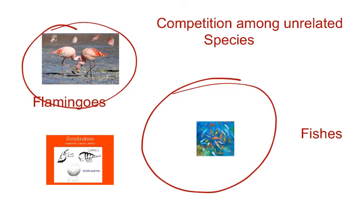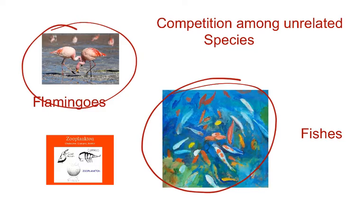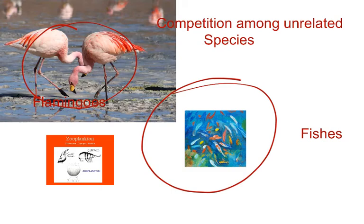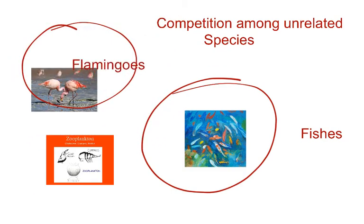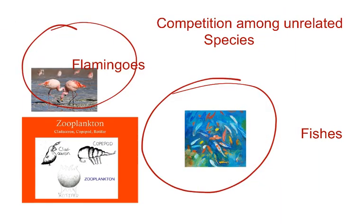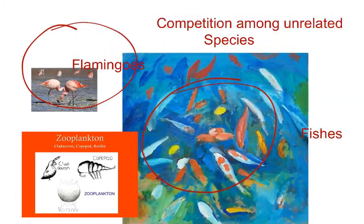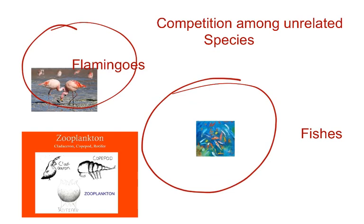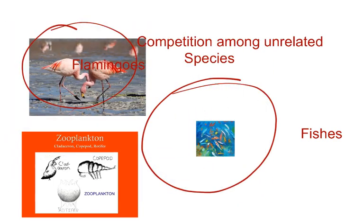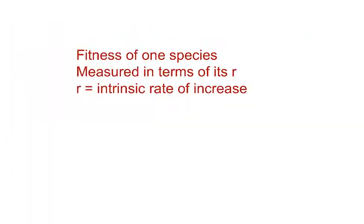In this case, the fish population is coming close to extinction. The fish population is getting reduced because of the non-local flamingos when they are introduced into the habitat. Interestingly, the zooplankton population, which is the food for both flamingos and fishes, is equal and abundant. But even so, the interference competition from flamingos leads to reducing the fish population. Fitness of one species can be measured in terms of its intrinsic rate of increase.